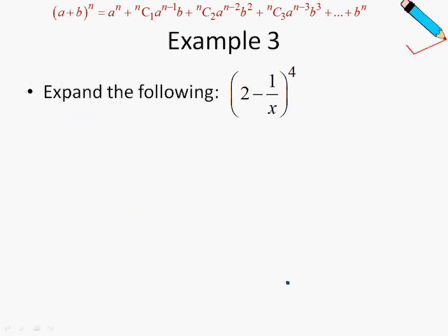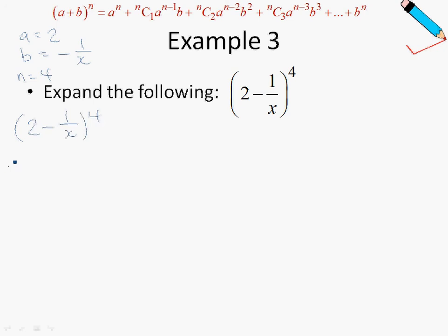Third example. Once again, let's identify first and foremost: my a in this case is 2, my b is negative 1 over x — take note, b is negative 1 over x, not positive 1 over x — and n is just 4. I'm going to show you just the first three terms.